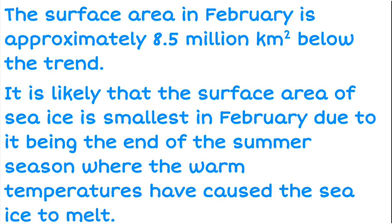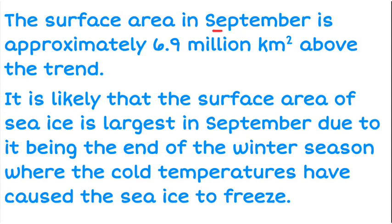Then I interpret the February and September values. The surface area in February is approximately 8.5 million square kilometres below the trend. It's likely smallest in February because it's the end of summer — the sea water has slowly warmed up over the entire summer, so sea temperature is at its highest, meaning the sea ice will have melted. In September, the surface area is approximately 6.9 million square kilometres above the trend. September is the end of winter, so the ice has had all winter to freeze, which is why the surface area of sea ice is at its largest at that point in time.